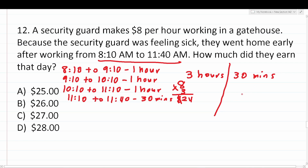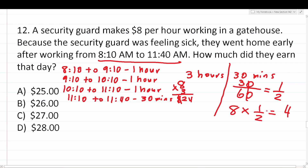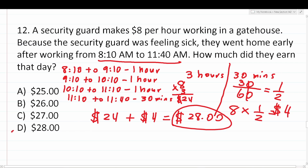What about the 30 minutes? There are 60 minutes in an hour, so 30 minutes over 60 minutes reduces to one half. They worked half of an hour. What is 8 times one half? That's $4. For this half hour, they made $4. In total, they made $24 plus $4 — for the day, they made $28, which is answer choice D.